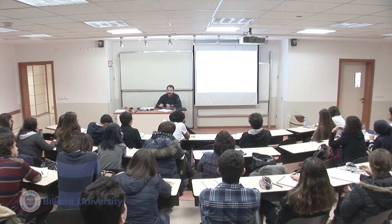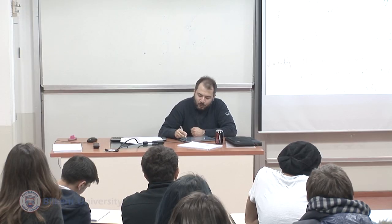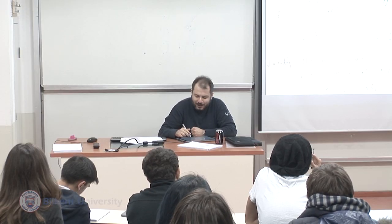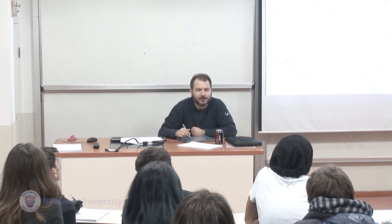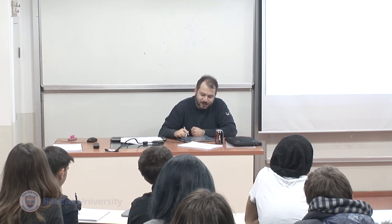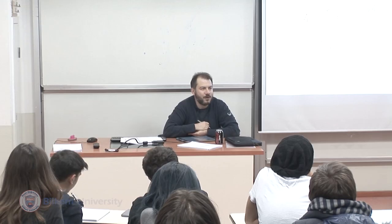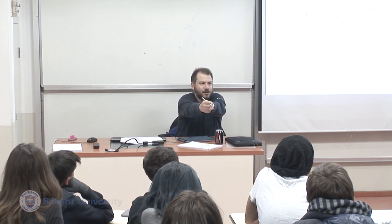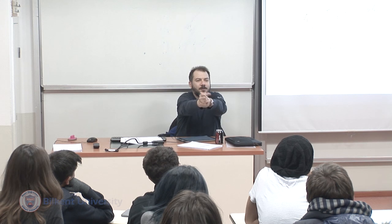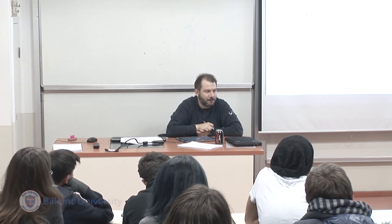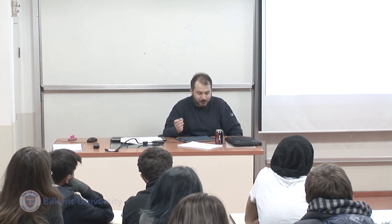The second equation comes from the fact that the relative velocity of the bullet with respect to the gun is always Vm. So Vb1 minus (−V1), which is Vb1 + V1, equals Vm. That's the velocity of the bullet with respect to the gun. Because Bond is moving back, the bullet's velocity with respect to the ground is reduced.